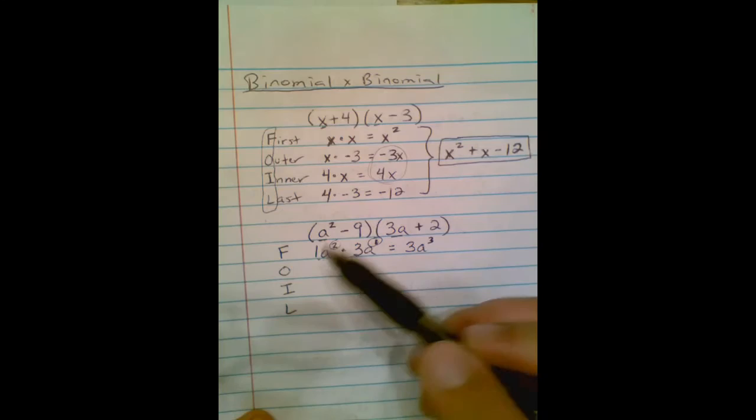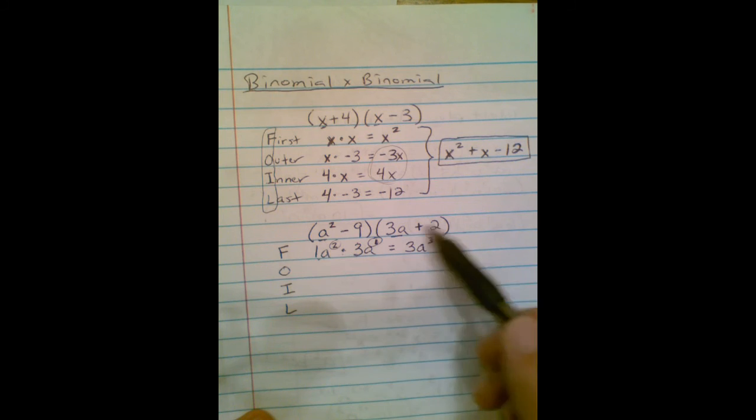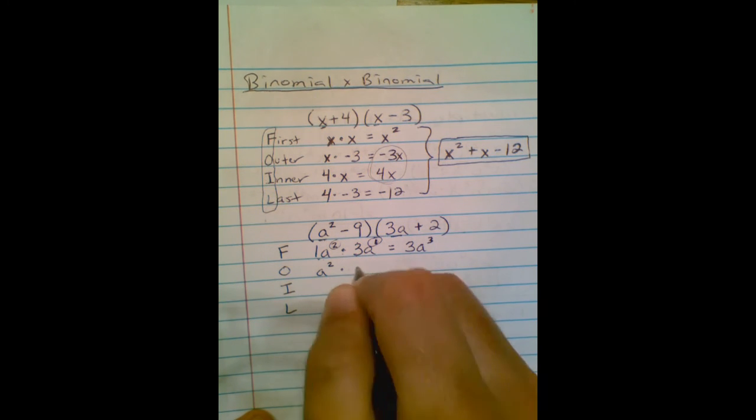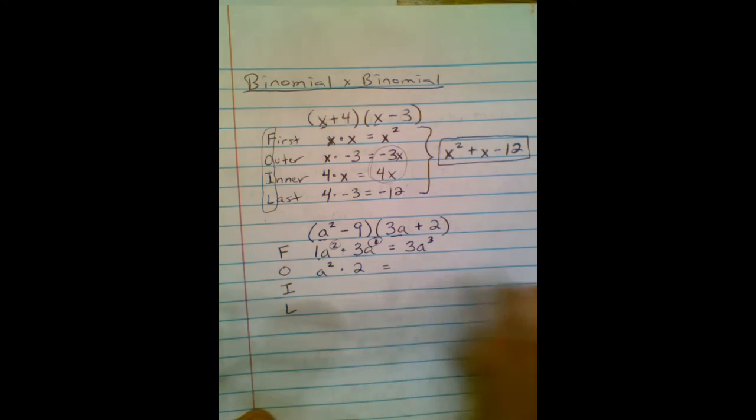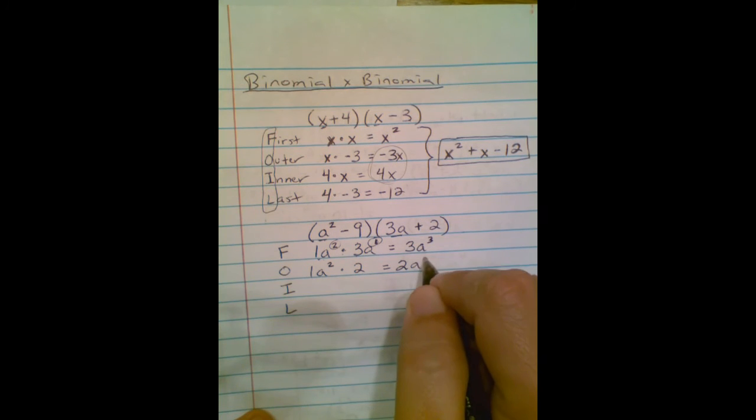The outer terms. I got a² on the outside over here, 2 is on the outside over here. So I got a² times 2. I got a 1 in front of that. 1 times 2 is 2. There is no a or a² behind the 2, so I just have 2a².